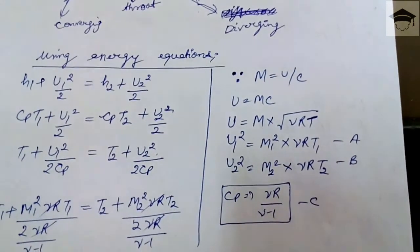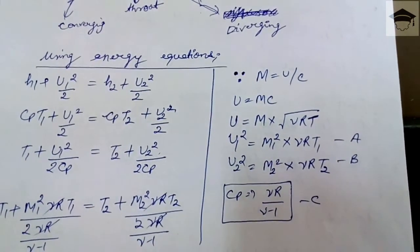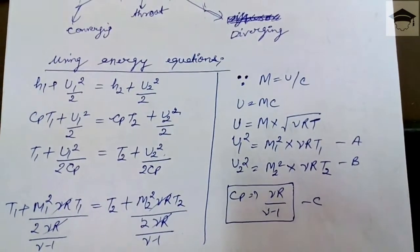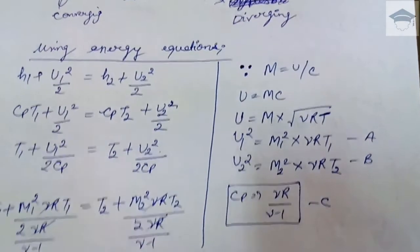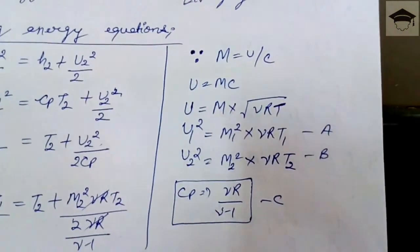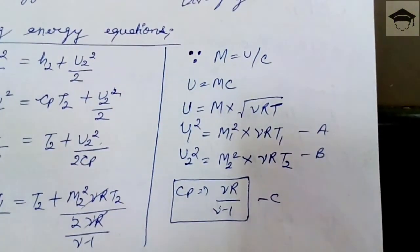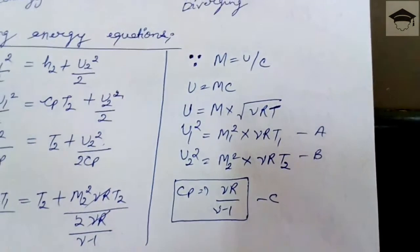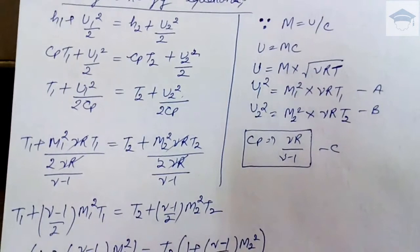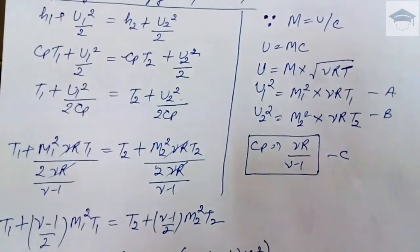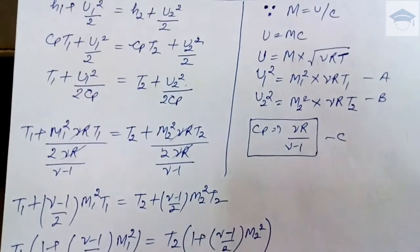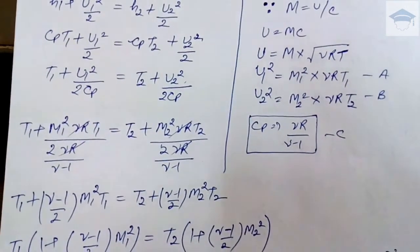Also, cp = γR/(γ−1) (relation C). Substituting relations A, B, and C into the equation T1 + u1²/(2cp) = T2 + u2²/(2cp), we get: T1 + M1²·γRT1 / [2·γR/(γ−1)] = T2 + M2²·γRT2 / [2·γR/(γ−1)]. The γR cancels, leaving: T1 + (γ−1)/2 · M1²·T1 = T2 + (γ−1)/2 · M2²·T2.